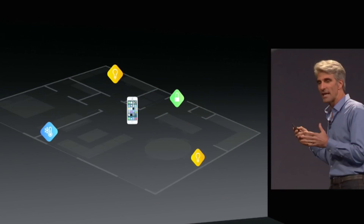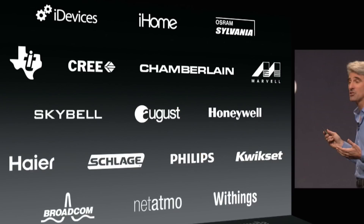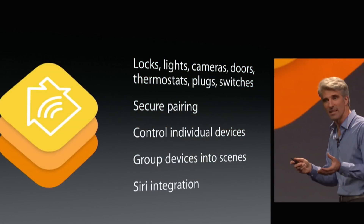They also announced HomeKit, which is a centralized home automation hub for iOS devices. It's basically an API that allows developers to integrate home automation devices — such as lights, garage door openers, and door locks — into iOS, and even use Siri to invoke commands. So you could say 'Hey Siri, open up my garage door' and Siri will prompt the home automation device to do so. Pretty amazing stuff coming down the pipeline, and maybe Apple will dabble into home automation themselves in the near future.